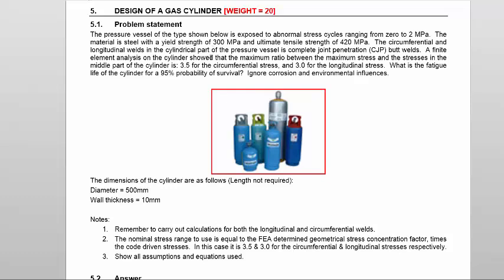The finite element analysis showed that the maximum ratio between the maximum stress and the stresses in the middle part of the cylinder is 3.5 for circumferential and 3.0 for longitudinal stress. We take the stresses calculated using thin wall cylinder theory and multiply by 3.5 to get the stress in the curved areas where we have longitudinal welds subject to circumferential stress, and by 3.0 for the longitudinal stress at circumferential welds. Then we apply the SN curve for the 95% probability of survival using the detail category dependent SN curves.